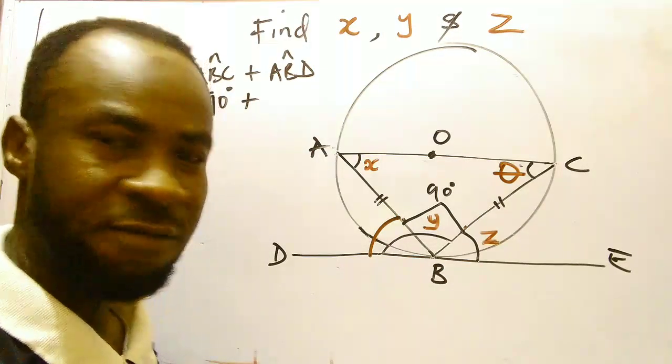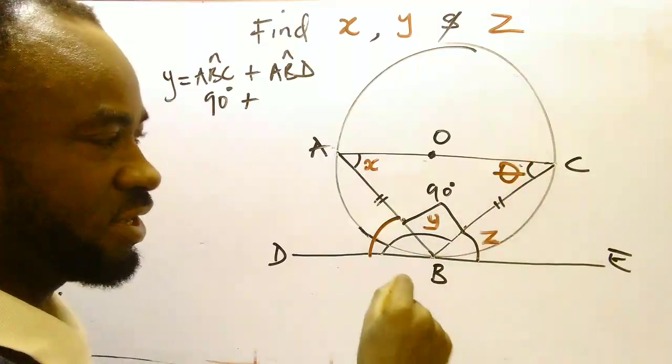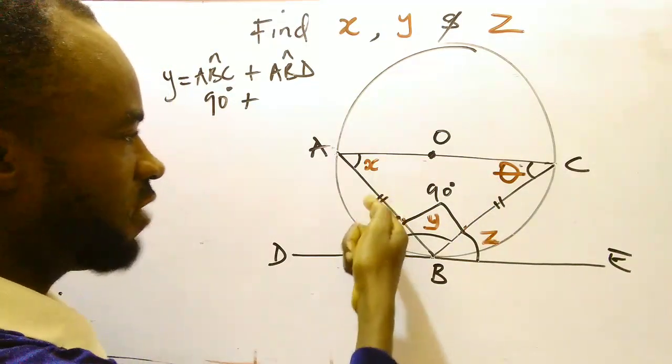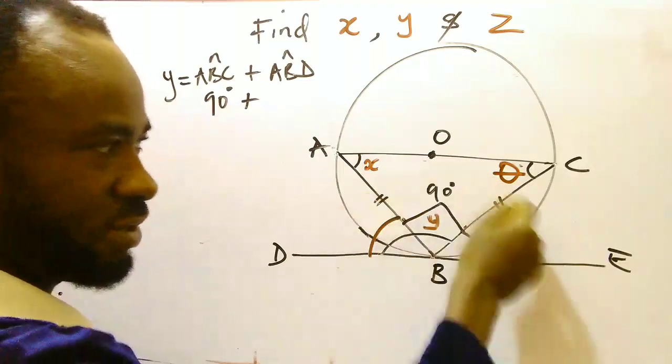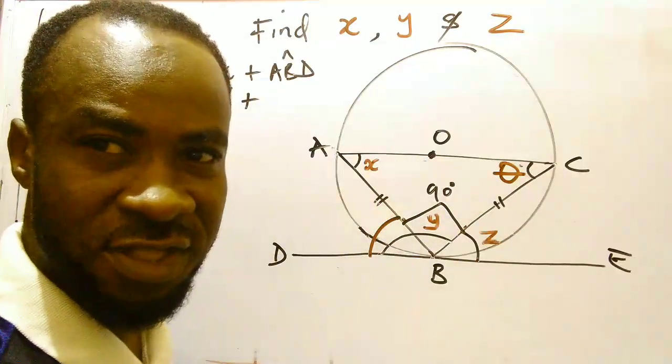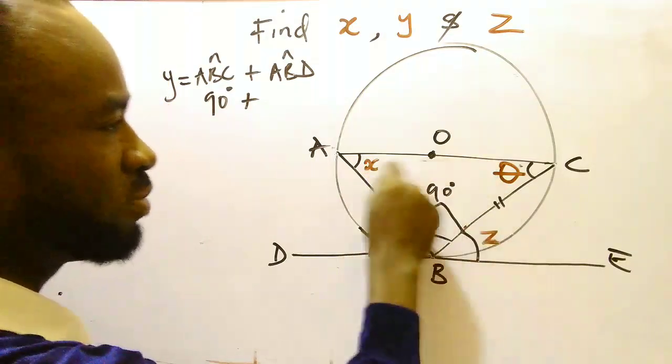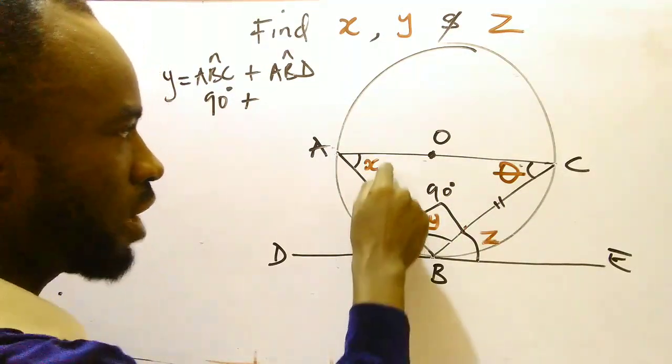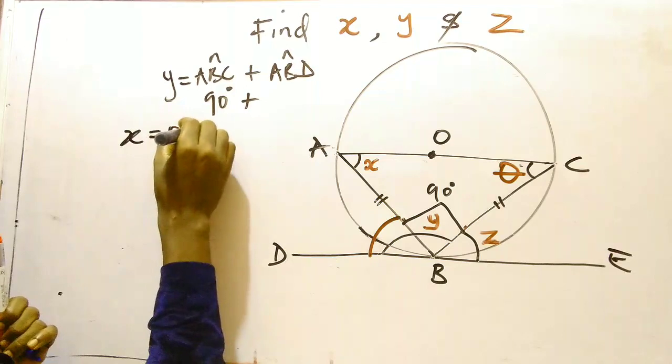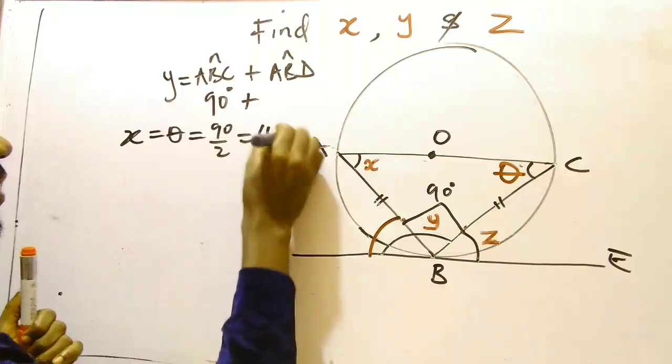Now how do we get angle theta? Very easy. We note that this angle here is 90, our ABC is 90. So it therefore means that this angle X and theta will be equal. Why? Because these two lines here have been marked as equal, therefore this triangle is an isosceles triangle. Therefore, the base angles will be equal. And these two must sum up to 90 since it is already 90. So our X is equal to theta and that's going to give us 90 divided by 2, and that is 45 degrees.